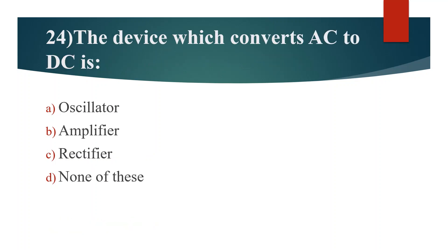Twenty-fourth question. The device which converts AC to DC is. Option A: Oscillator. Option B: Amplifier. Option C: Rectifier. Option D: None of these. Answer is Option C: Rectifier.